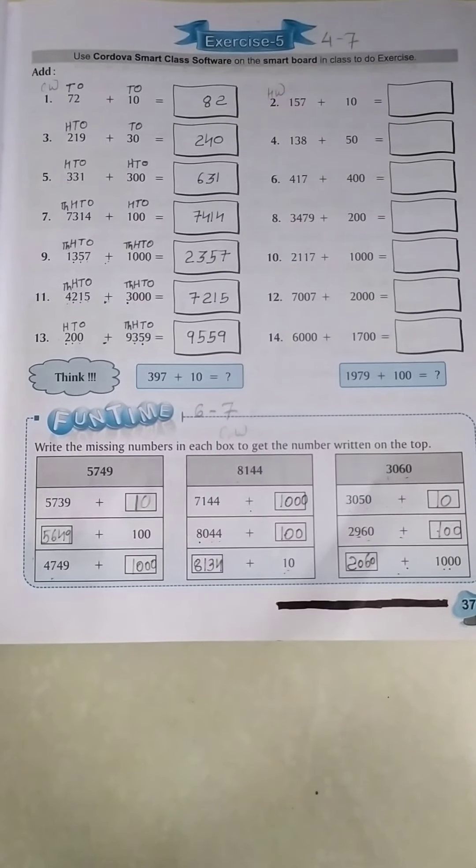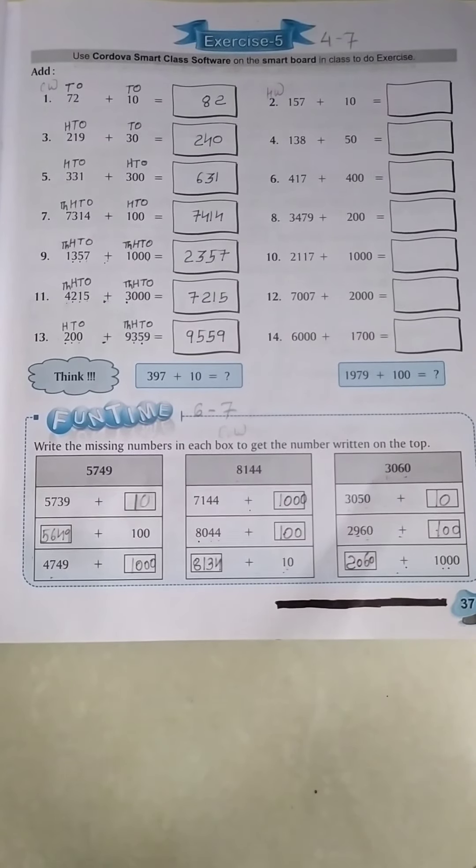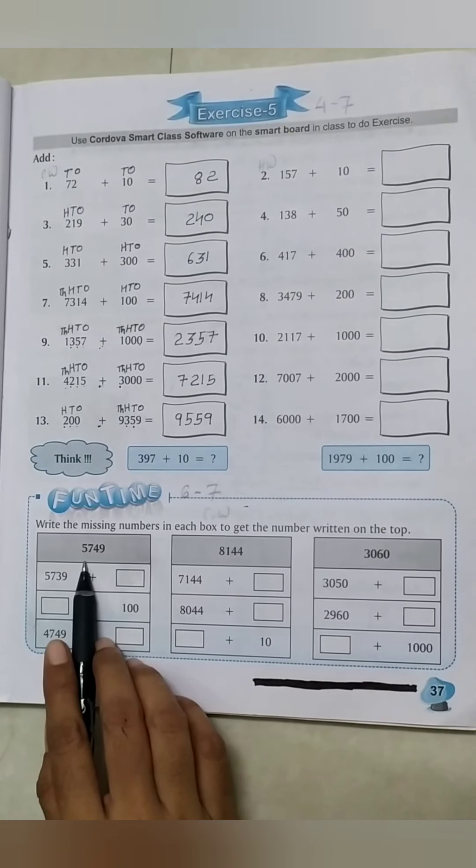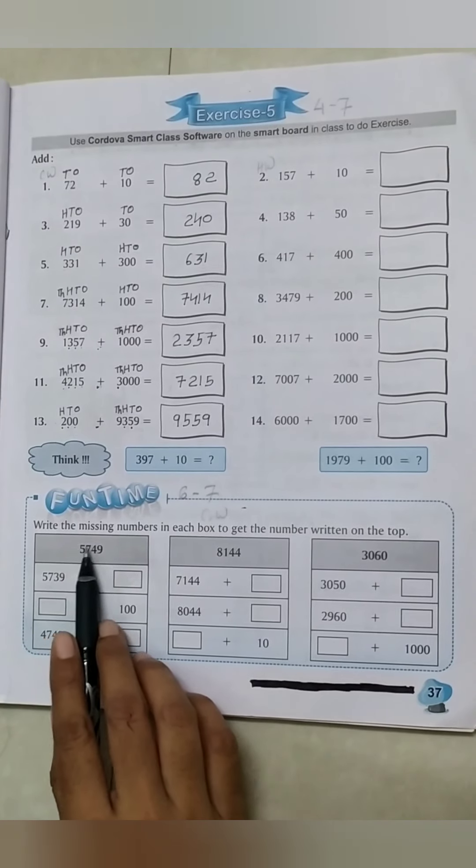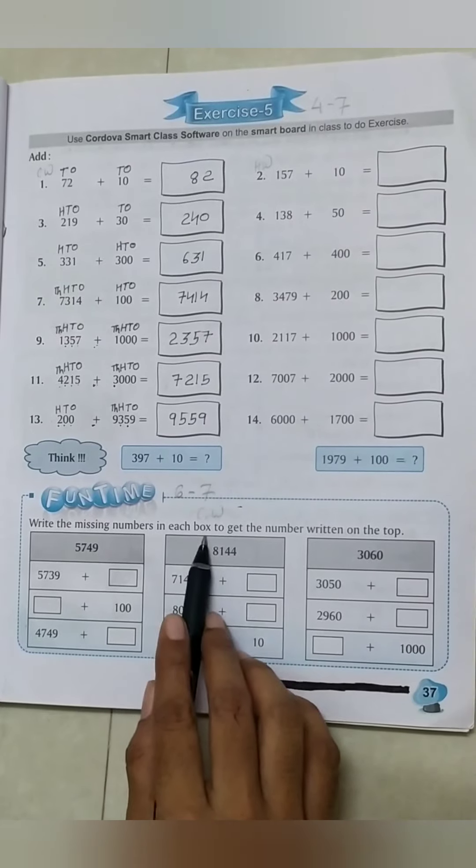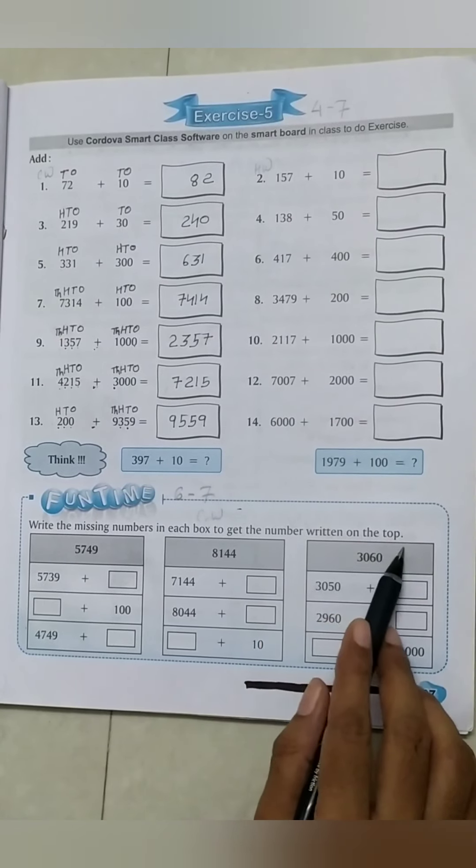Chapter 4, Exercise No. 5, Question No. 2: Fun Time. Write the missing number in each box to get the number written on the top.